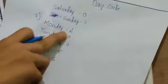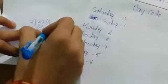The remainder is 2. You can see here, day code. The day code, Monday is equal to 2. You can see here, Monday is the date.